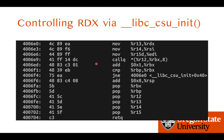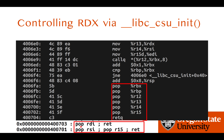Since libc_csu_init is always present in C binaries, let's look at what instructions it contains. In the disassembly, the interesting parts include: pop rbx, rbp, r12, r13, r14, r15, and return. By splitting r14 and r15 we can find pop rdi and return, and by splitting r14 we get pop rsi, pop r15, and return.